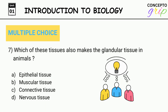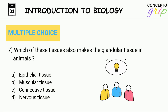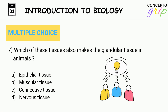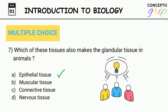Question 7. Which of these tissues also makes the glandular tissue in animals? A. Epithelial tissue, B. Muscular tissue, C. Connective tissue, D. Nervous tissue. Correct option is A. Epithelial tissue.